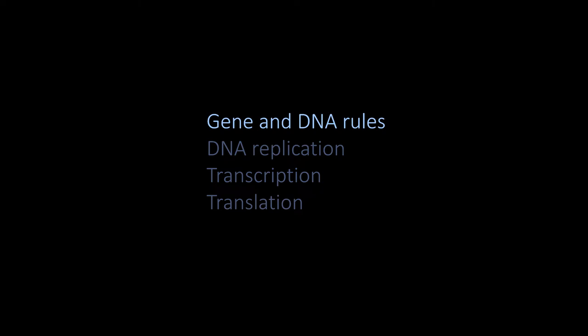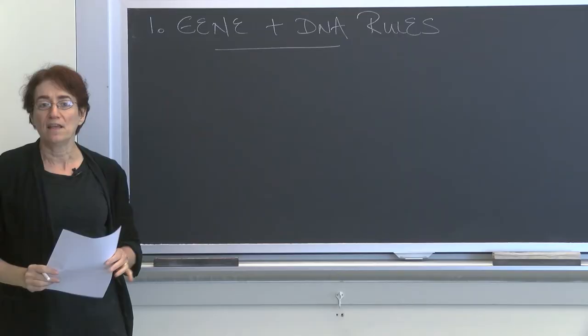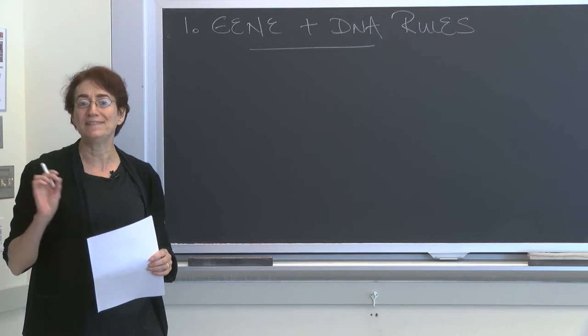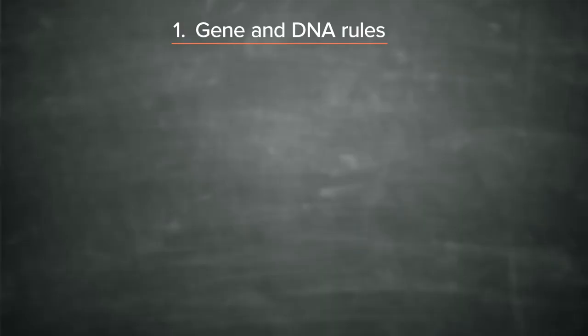Let's get started with the notion of a gene and some rules associated with DNA. We previously discussed that the gene, the unit of hereditary, of how things are passed on from generation to generation, is usually made of DNA. If we pose the question, what is a gene? There's a number of ways that we can answer it. We can say that it is this unit of inheritance, hereditary.